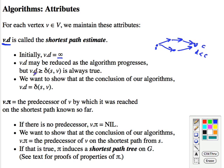And we always maintain the fact that it is an upper bound on the actual shortest path cost. And what we want to show is when the algorithm concludes that it is identical to the shortest path cost. v.π is the usual predecessor pointer to the last vertex that we reached this from. So if there's no predecessor, v.π is going to be nil. And of course, we also want to show that at the conclusion of our algorithms that v.π is pointing to the predecessor on the shortest path. And so then π will induce a shortest path tree.